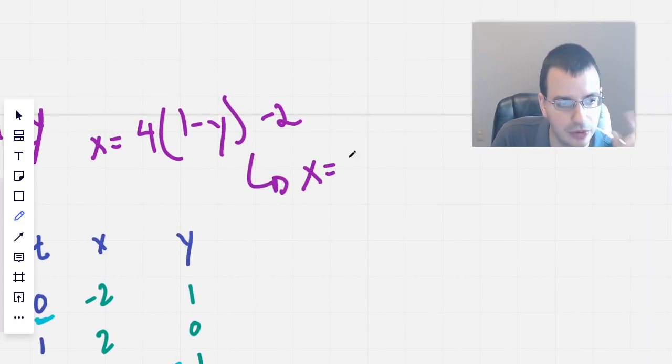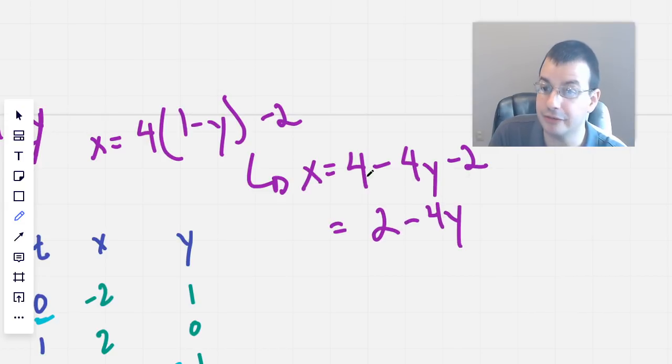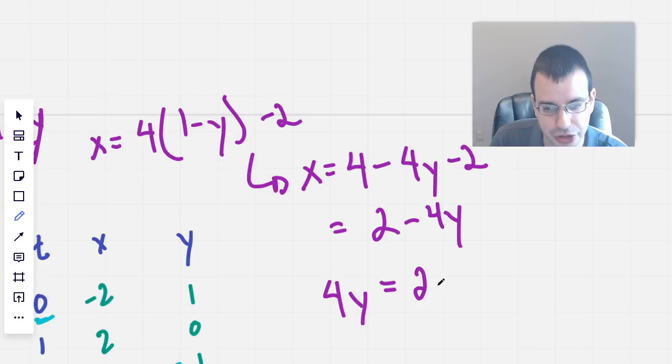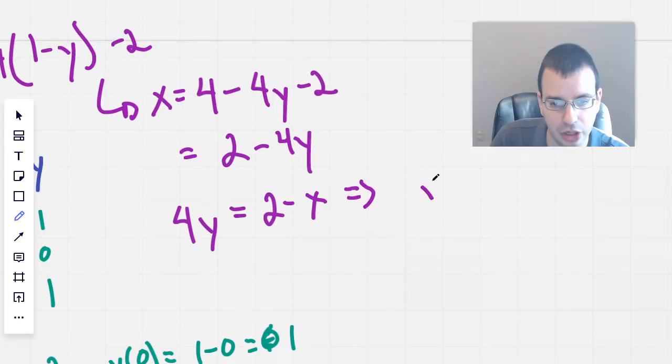Now I have this, I'm going to plug it into this equation. We have x equals 4 times t, but we know that t equals 1 minus y from the equation below, so x equals 4 times 1 minus y minus 2. Then we have x equals 4 minus 4y minus 2.